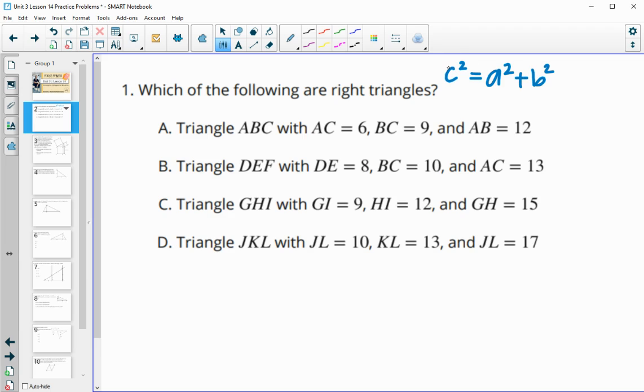C is always the longest of the three lengths. So we see these three lengths, we'll square them all. 6 squared is 36, 9 squared is 81, and 12 squared is 144. When we do 36 plus 81, that does not equal 144, so this is not a right triangle.